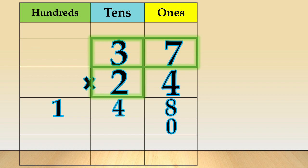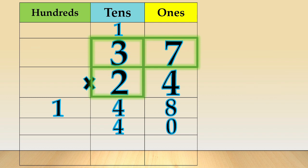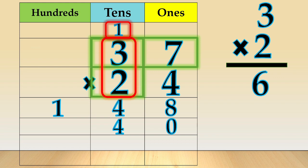Next, we multiply 7 times 2. 7 times 2 is equal to 14. Now, we write 4 and carry 1 to the tens column. Then, we multiply 3 times 2 is equal to 6. Then, add the 1 ten that you have carried over. 6 plus 1 is equal to 7.